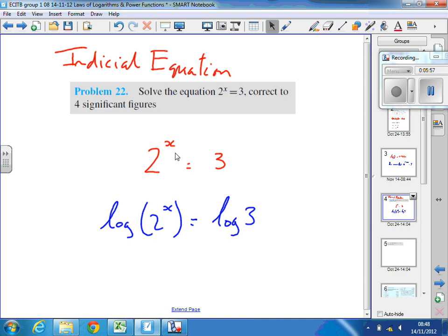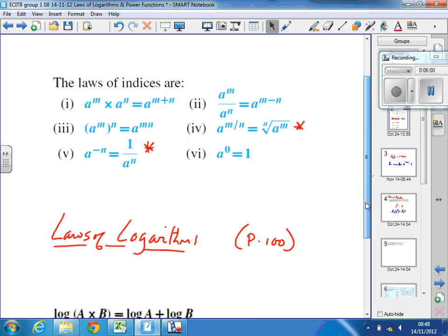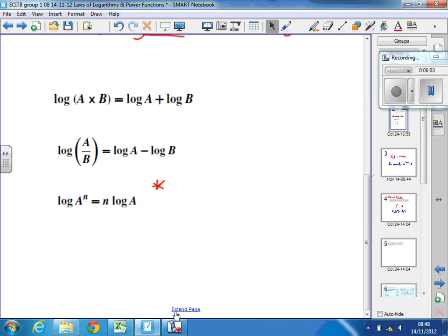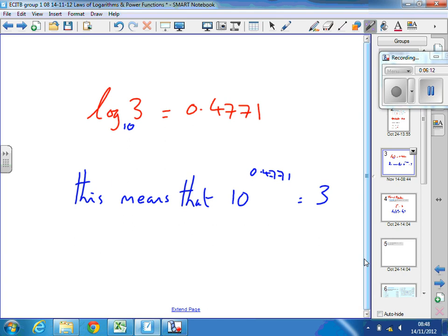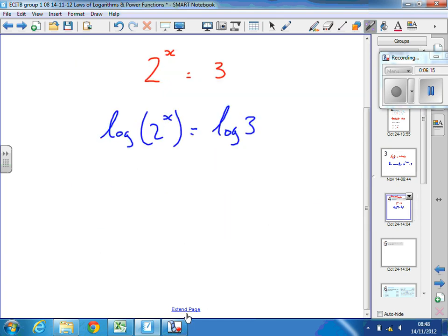And that means, using that law of logarithms that we were just looking at, this one, that we've now got a power situation, and that power can come down and become a multiplier. And that's exactly why we do it. So if we go back to this, that means that we can write, x times the logarithm of 2 equals the logarithm of 3. And can you see now what we do to find x, divide both sides by the logarithm of 2. So x turns out to equal the logarithm of 3, divided by the logarithm of 2.